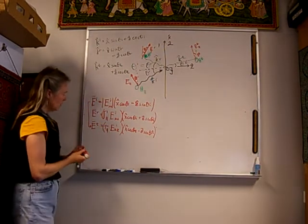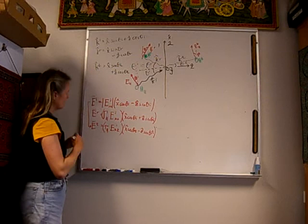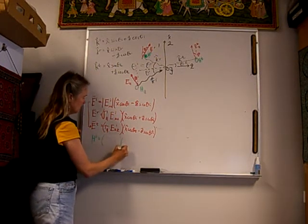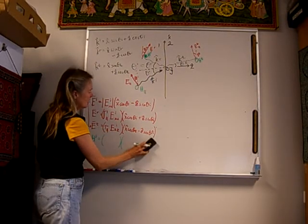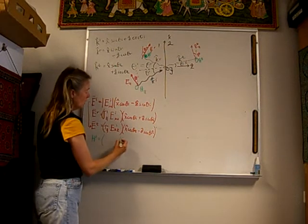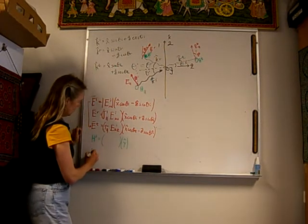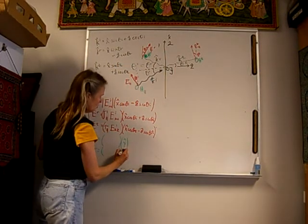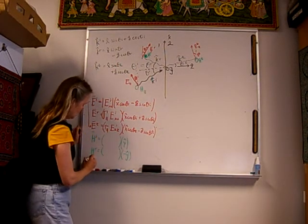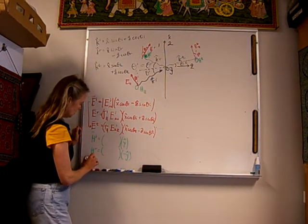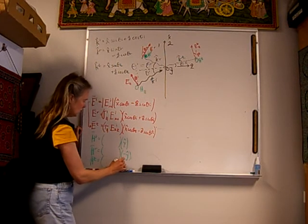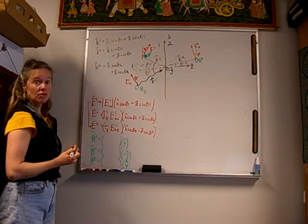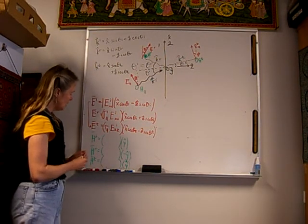Now let's look at our magnetic fields. The incident magnetic field polarization is straight out of the board, which is in the y direction. The reflected magnetic field is into the board, so it is in the negative y direction. The transmitted magnetic field is out of the board, in the positive y direction. So we've found the polarization for each of our magnetic field components.